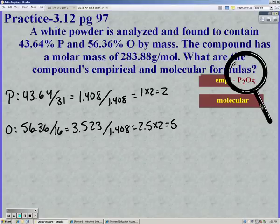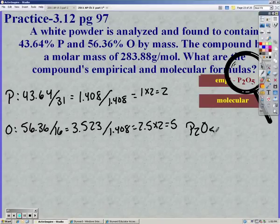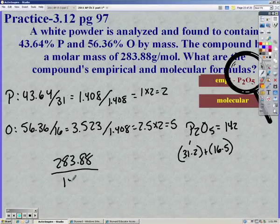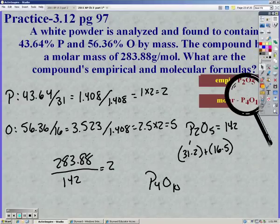Now we need our molecular formula. So remember the first thing you need to do is find the empirical formula's molar mass. Phosphorus is 31, oxygen is 16, so that gives us 142. So 283.88 over 142 gives us 2. So we multiply our empirical by 2, giving us P4O10.